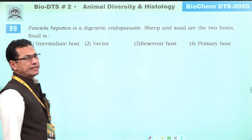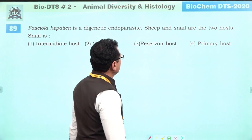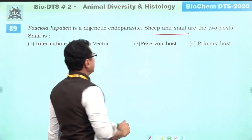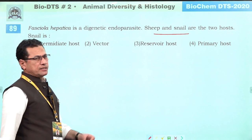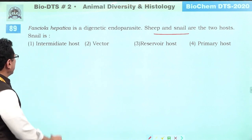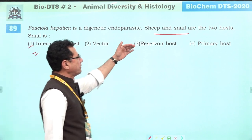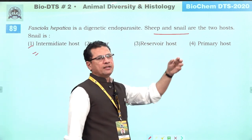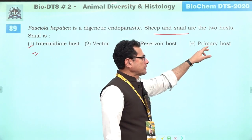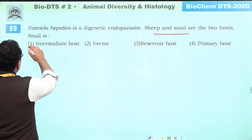Fasciola hepatica is a digenetic parasite — it completes its life cycle in two hosts: sheep and snail. The snail is the intermediate host, not the vector, not the reservoir host, and not the primary host. Answer is one: intermediate host.